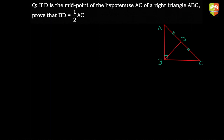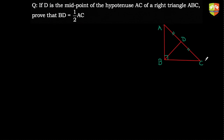To prove BD is half AC using congruence, we need two triangles where BD and AC are both involved. The natural candidate triangles are ADB and DBC, but apart from AD equal to DC, we see no relation between BD and AC. The Pythagorean theorem won't help, and we don't know whether BD is perpendicular to AC. So we need a construction.